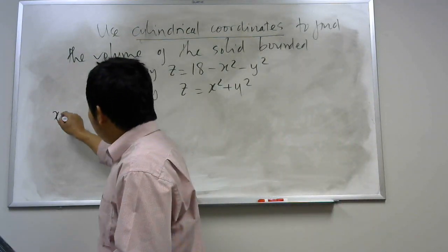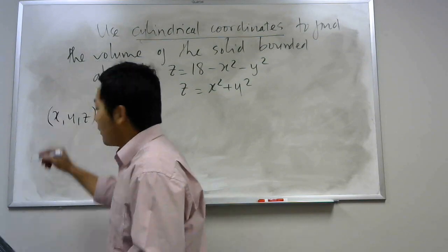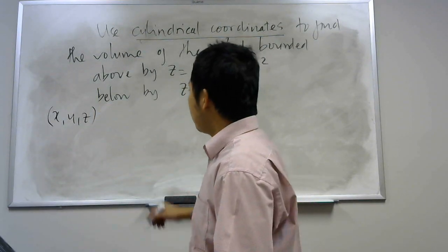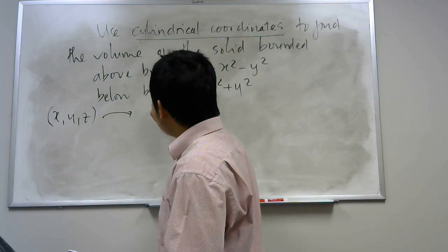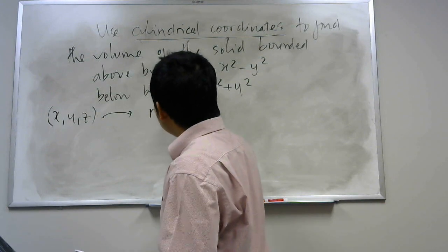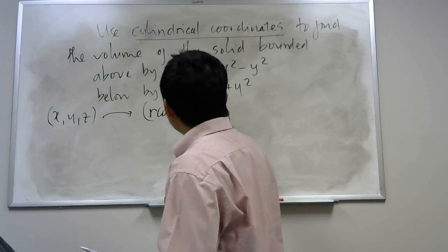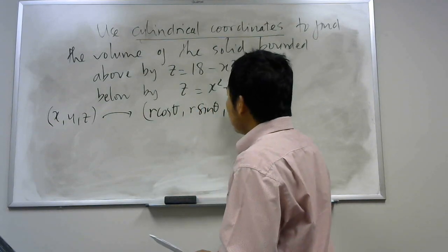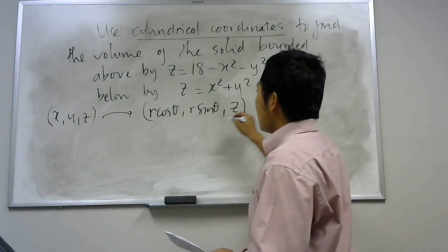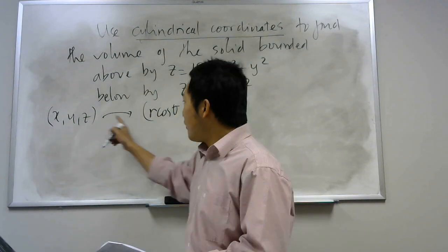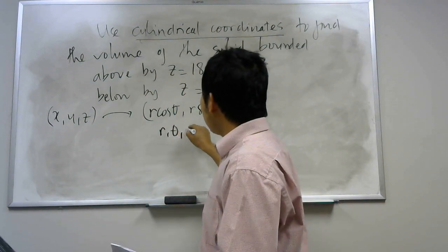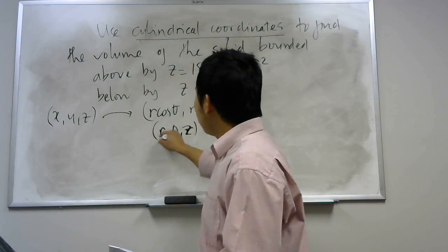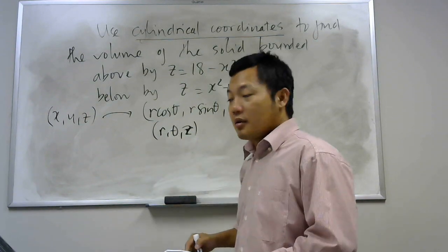So first we have x, y, z, that is rectangular coordinates. From here, if I put x equal to r cosine of theta, y equals r sine of theta, and then z, so basically we go from x, y, z to r, theta, and z, and this is called cylindrical coordinates.